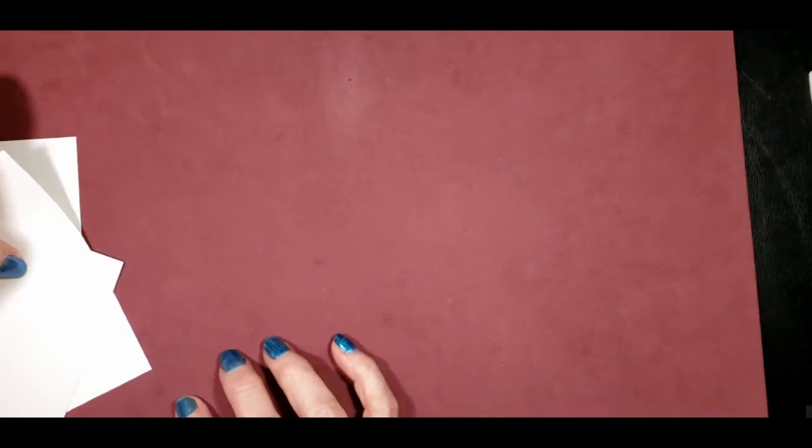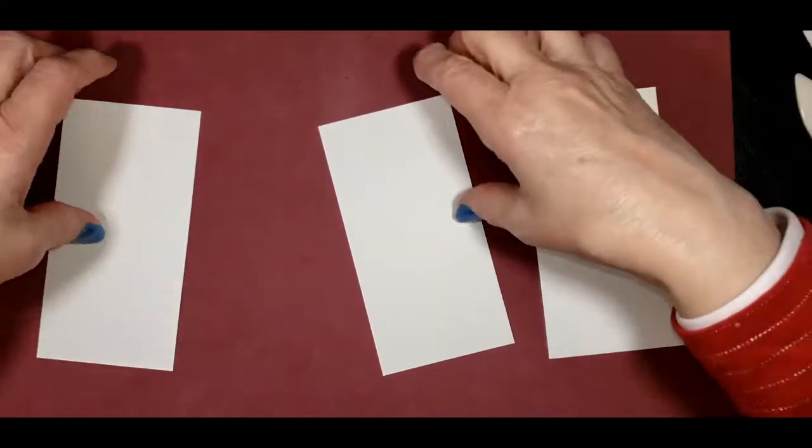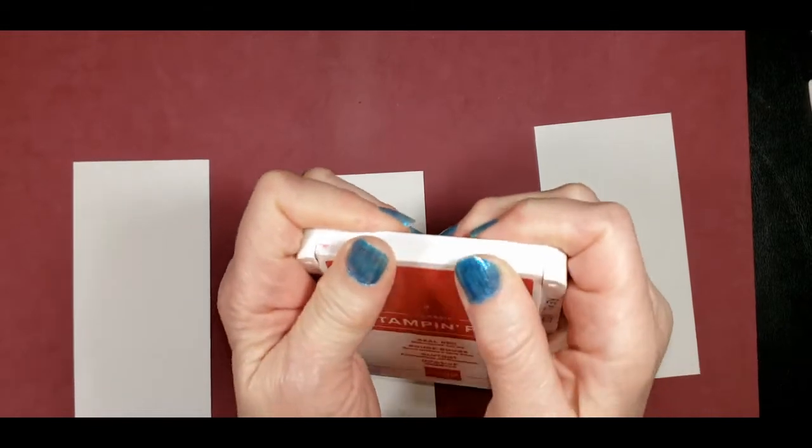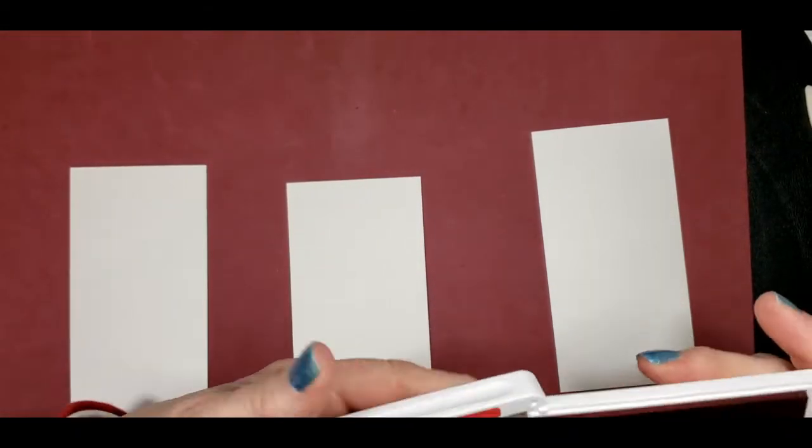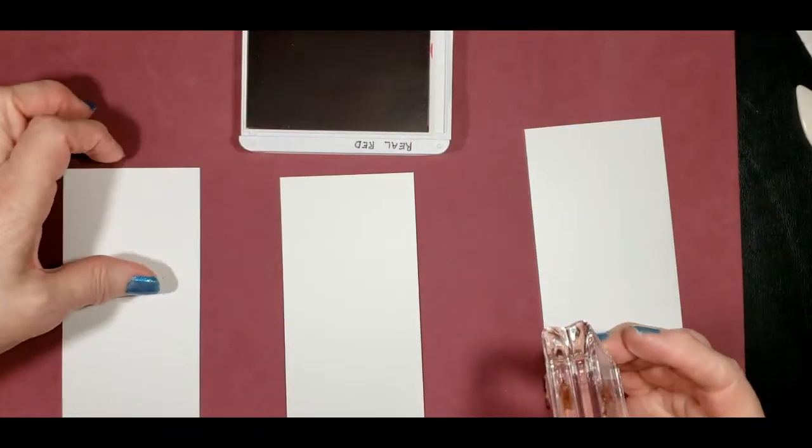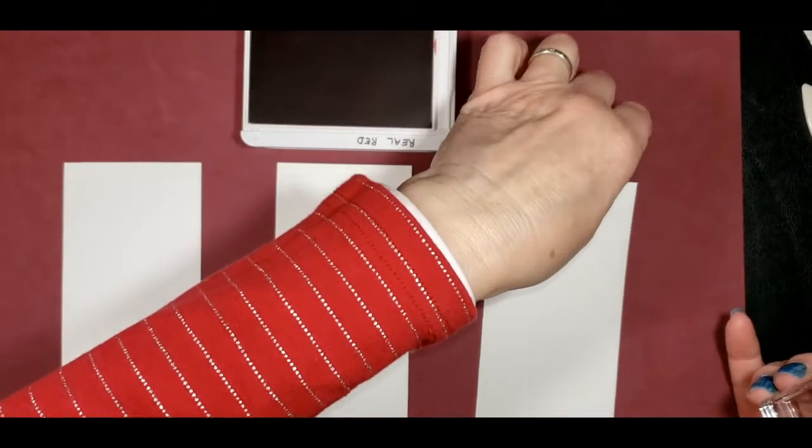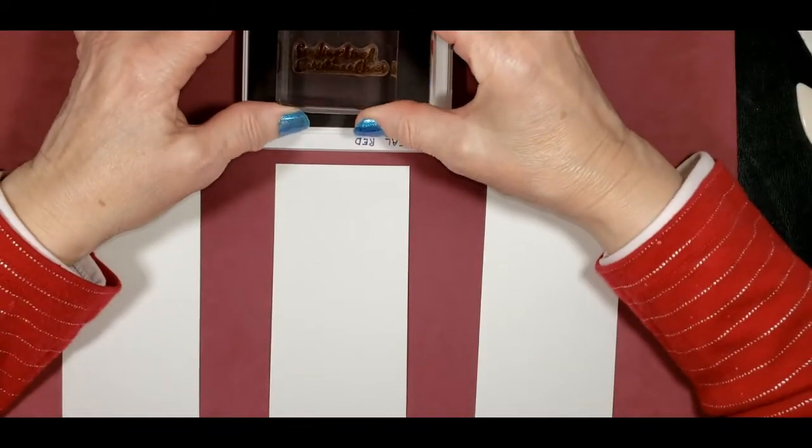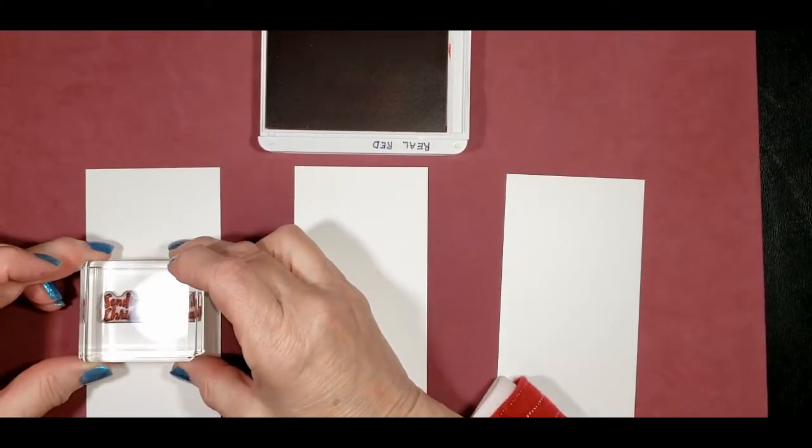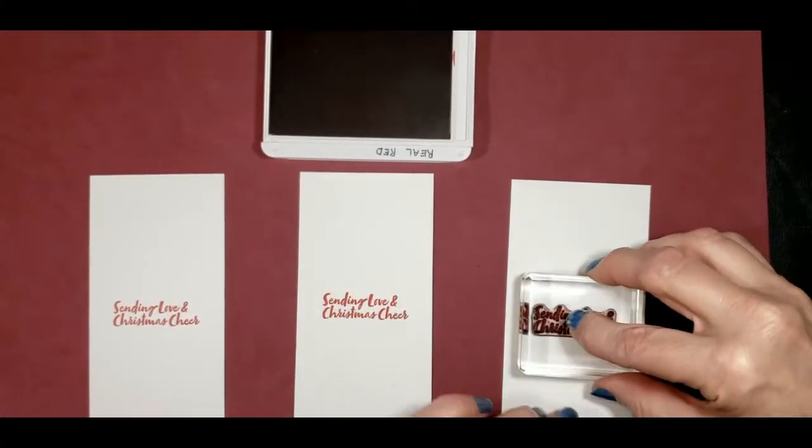As long as I have this out here, we'll go ahead and get these stamped. This is going to be done in real red. We're going to stamp it with the Sending Love and Christmas Cheer. I'm just going to stamp it in the middle of the card. But once we put this card, have it completely assembled, it'll be on the top half of the card. Because we're going to put that designer series paper on the top portion of this card.